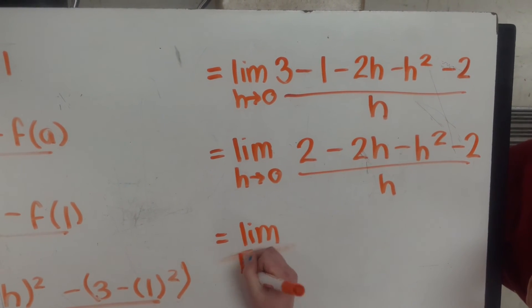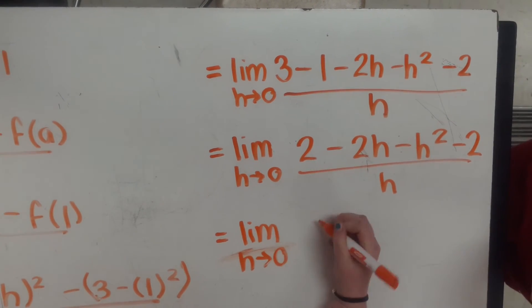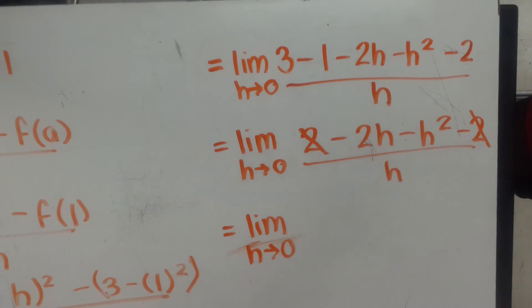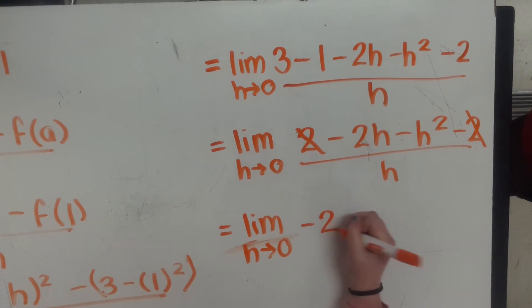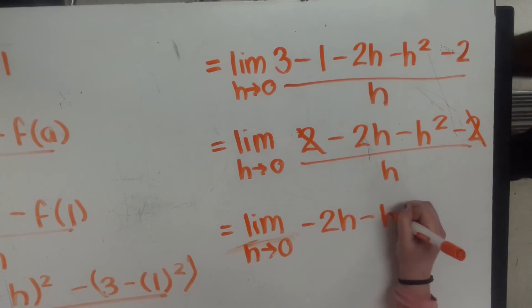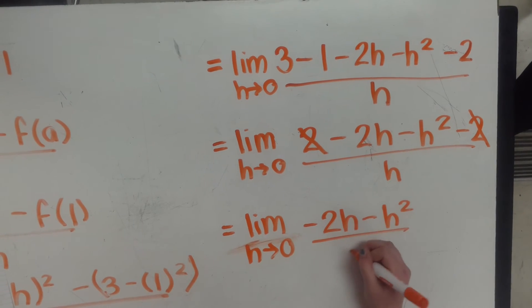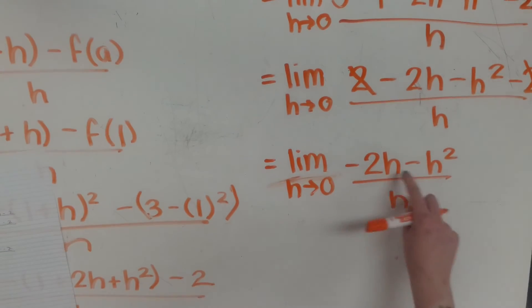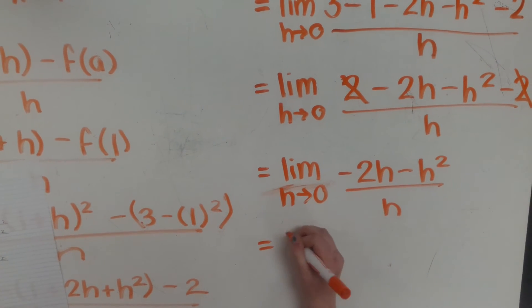No, not that. 2. So these can... Because 2 minus 2 is 0. So we have 2 minus 2h minus h squared divided by h. We can factor out the h's or an h from the top.